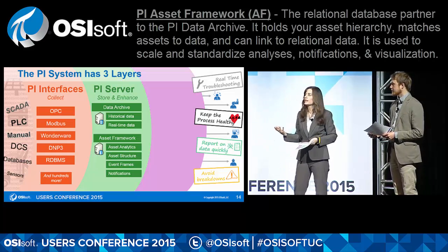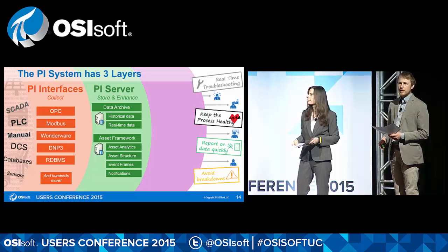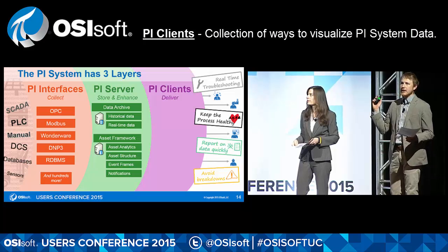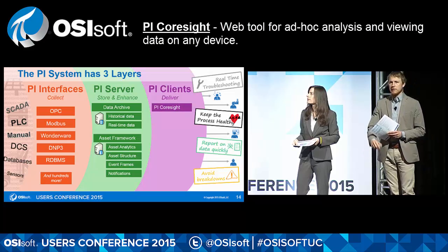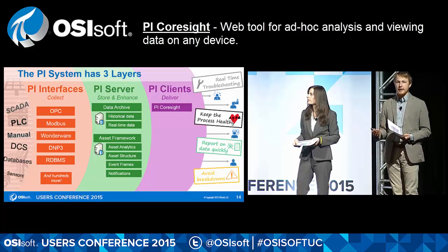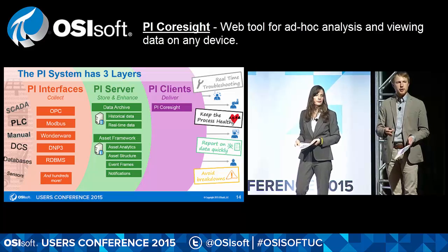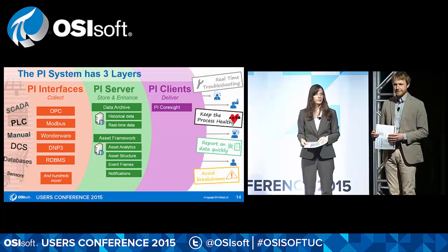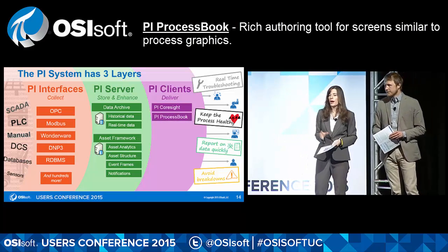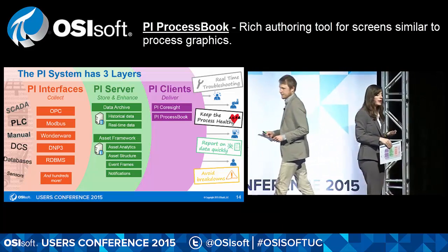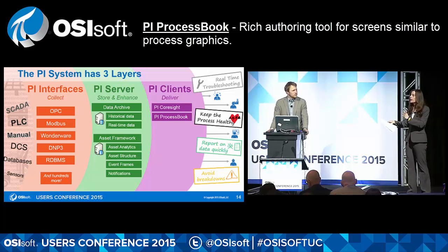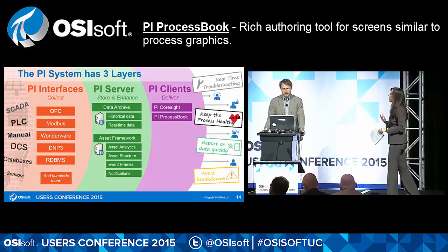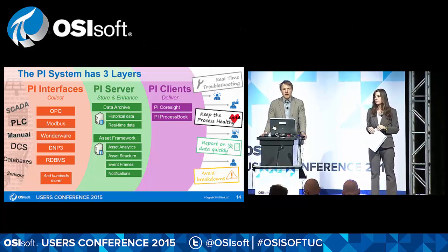The third layer of the PI system is the PI Clients, which deliver data to people and other machines. One example is PI Coresight — it goes over the web, can show PI ProcessBook screens, and can display any data from your PI Data Archive or Asset Framework. It's typically set up on your internal domain so you can access it whenever connected. PI ProcessBook displays are fully customizable — you can make them match how your control system looks — and people heavily involved in the process will often look at these every day.